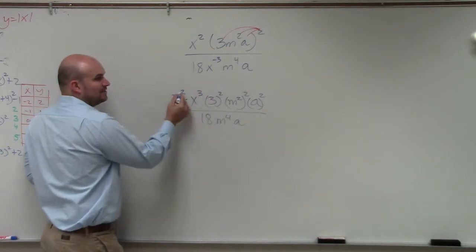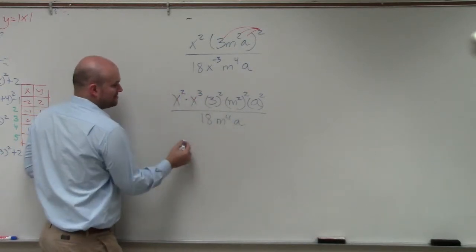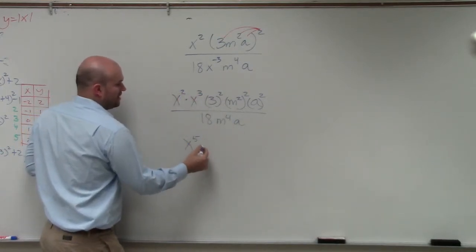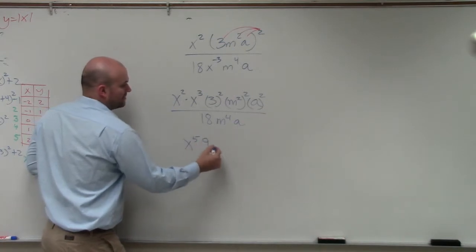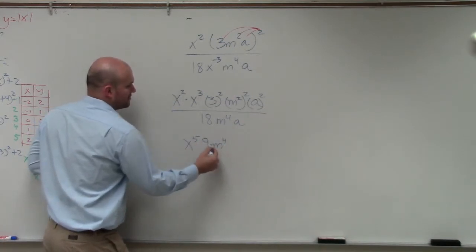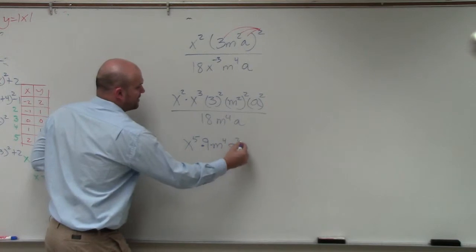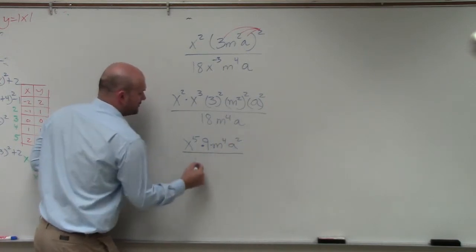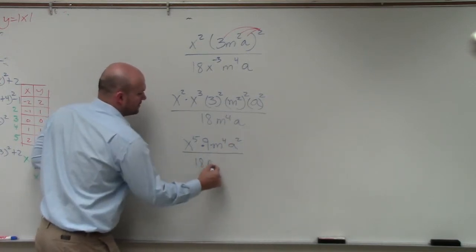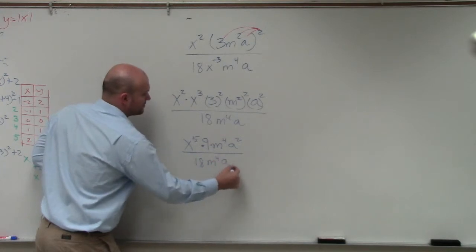Remember when you multiply, you add, right? So this becomes x to the fifth times 9 times m to the fourth times a squared all over 18 m to the fourth times a.